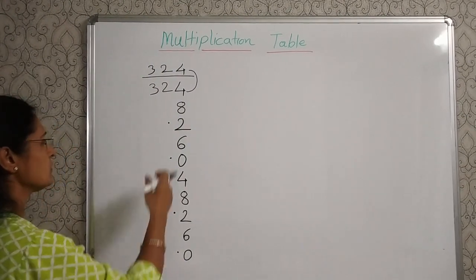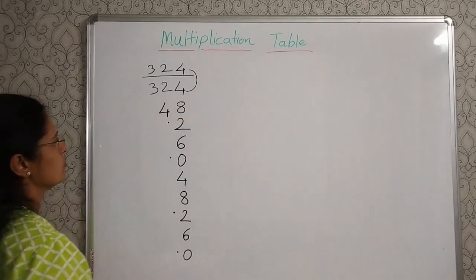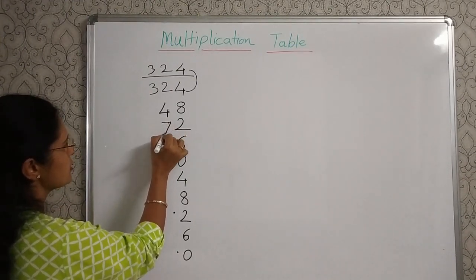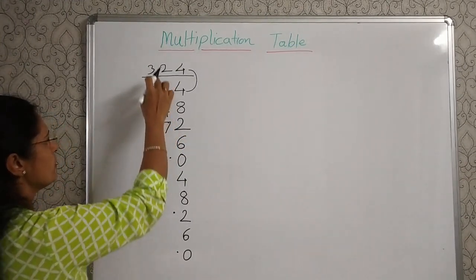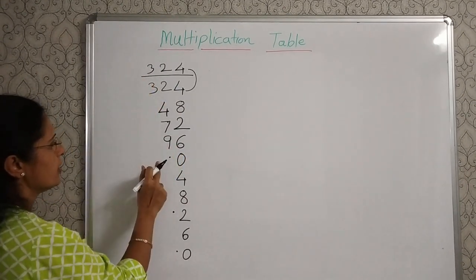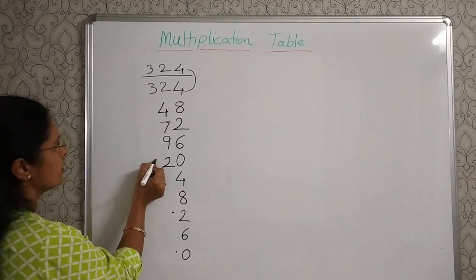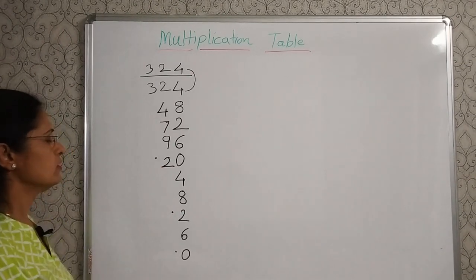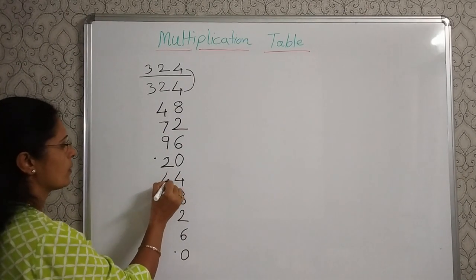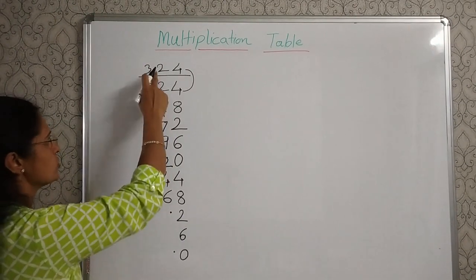The same method: 2 plus 2, 4. 4 plus 2, 6, and this carry over 7. 7 plus 2, 9. 9 plus 2, 11, and this one carry over 1, 12. But write only 2 here and the carry over 1, put a dot for that. 2 plus 2, 4. 4 plus 2, 6. 6 plus 2, 8.